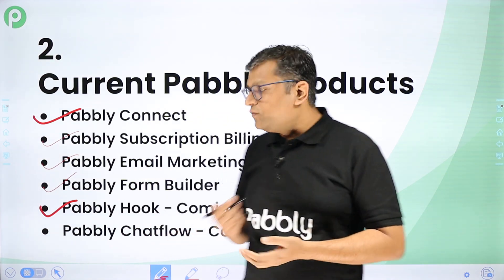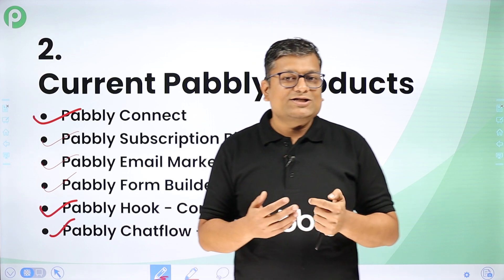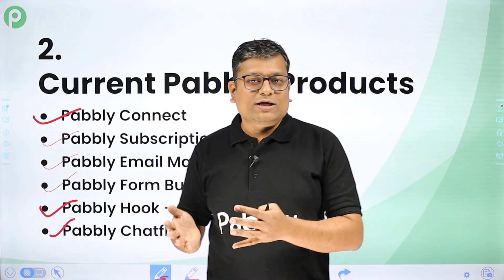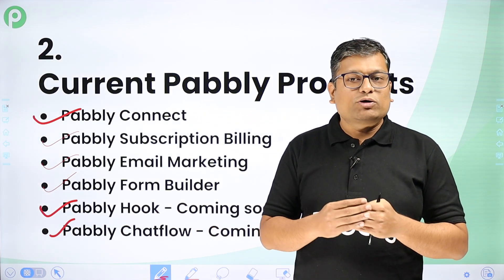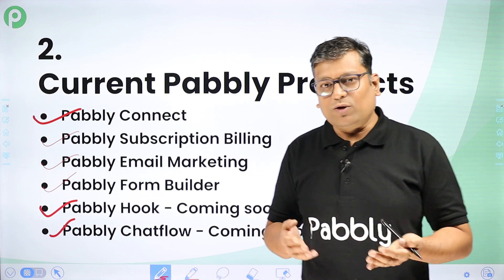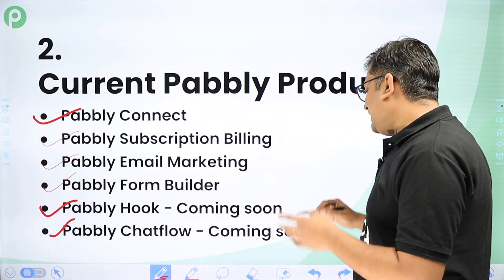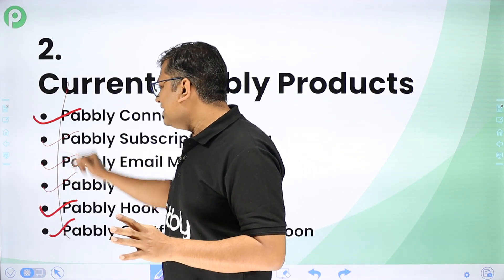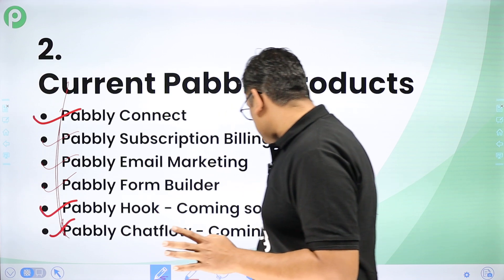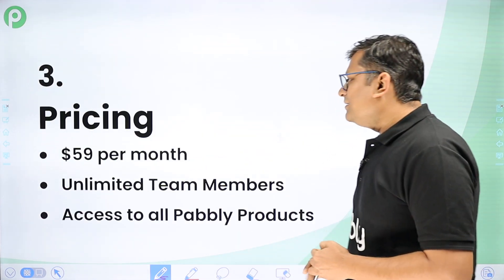The last product is Pably Chat Flow, a WhatsApp automation software. You can create and manage conversations with customers over WhatsApp, include multiple team members in a single platform, send and receive messages, and build a fully automated bot on WhatsApp. It is not yet released but will be available in about one to two weeks, and will be included in your subscription.